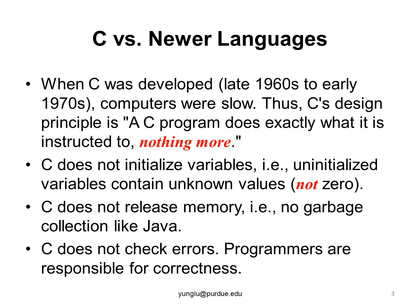Making that decision can slow down the program noticeably. When you write C programs, you are responsible for releasing the memory used for storing data. Also, C programs do not check errors because checking errors slows down programs. Programmers are responsible for ensuring the correctness of their programs.